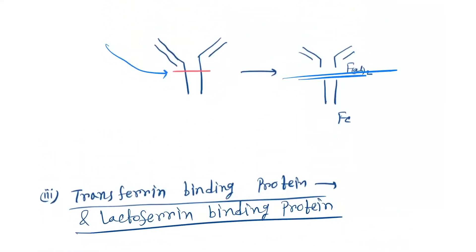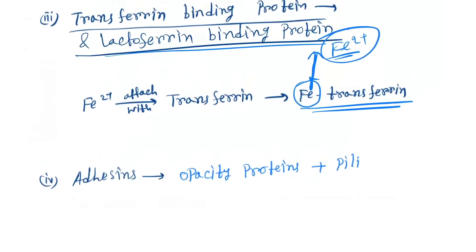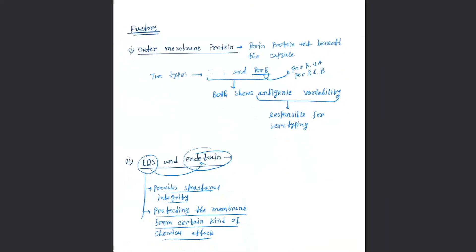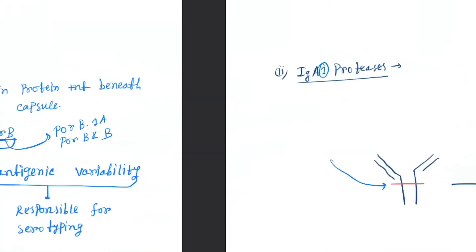Transferrin binding protein and lactoferrin binding protein. They will catch the iron part from the iron-transferrin complex. They will take the iron Fe2+. Adhesin, opacity proteins, and pili are there.